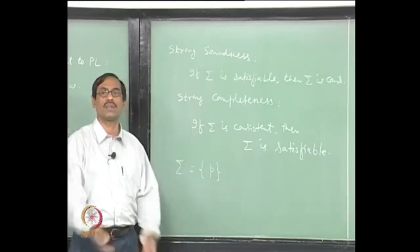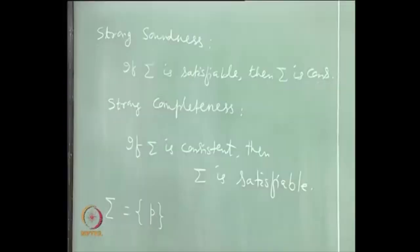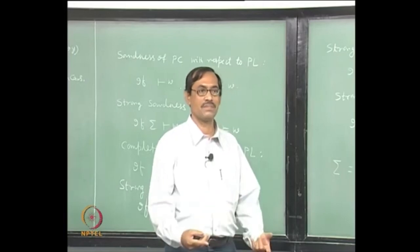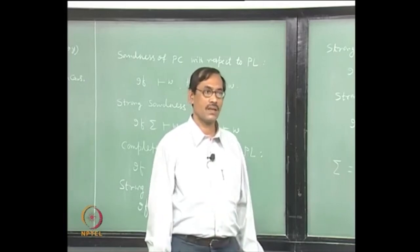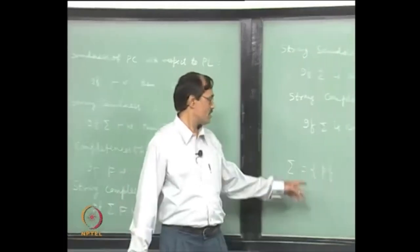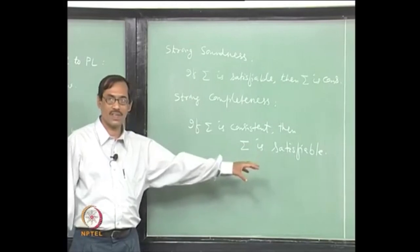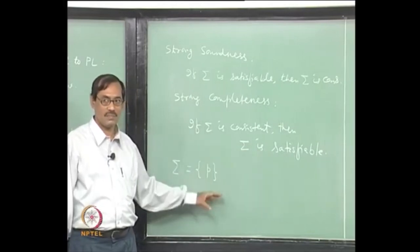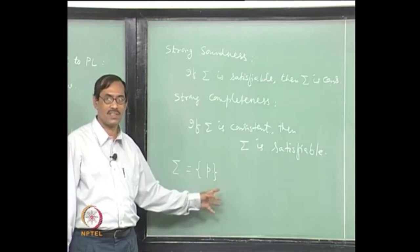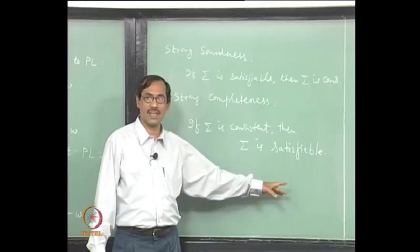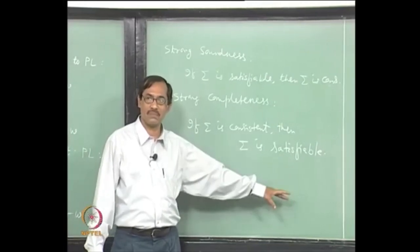Along with sigma, all of them should be consistent. Because in consistency, your assumption is you cannot deduce q and not q both from the same set. Soundness says: if this set is consistent, whatever you deduce from it will also give rise to the other side. Soundness says, if you deduce something from this set, that also along with this should be consistent, because on the other side it says only semantic entailment. All those will be entailed by soundness.